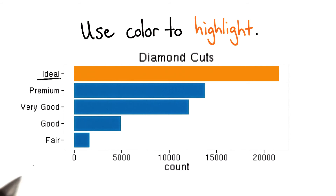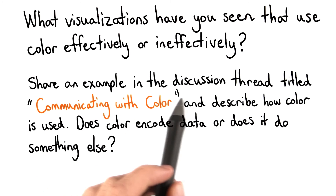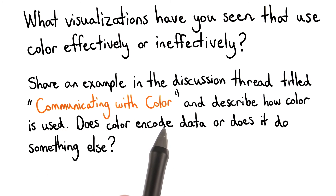Perhaps you've come across some good and not so good examples of color use in data visualizations. I'd like you to go grab a data visualization from the wild — be it the internet, a newspaper, magazine, or perhaps even a scientific paper. Describe how color is used in the graphic, and whether or not you think the use of color is effective. Maybe you can think of some ways the designer might have done something else.